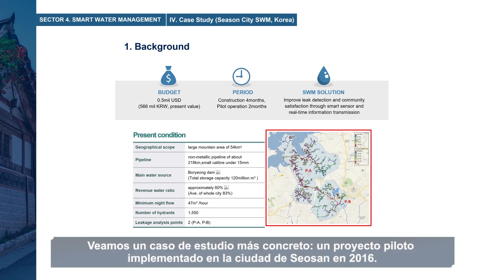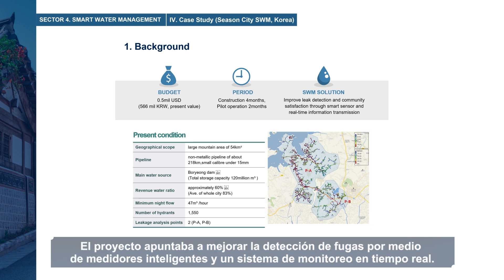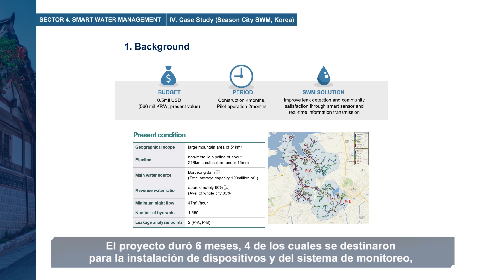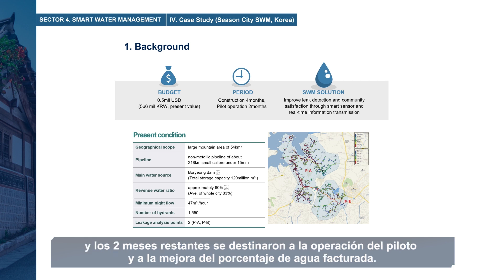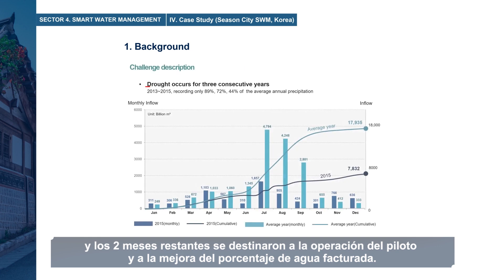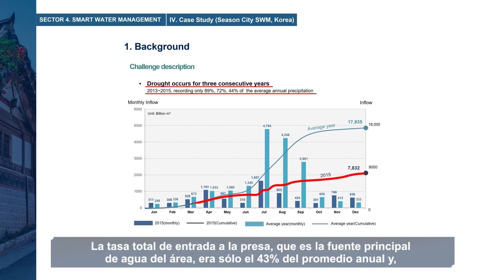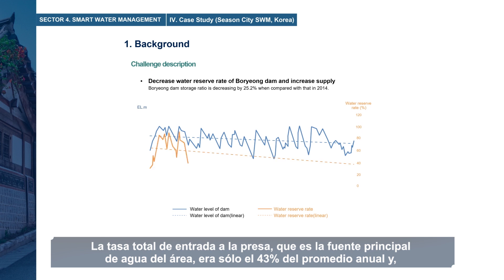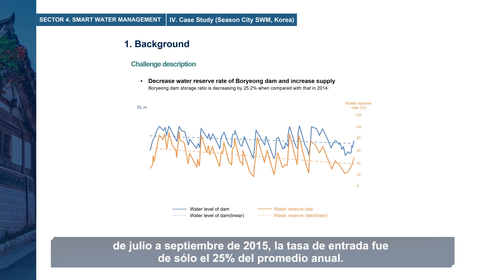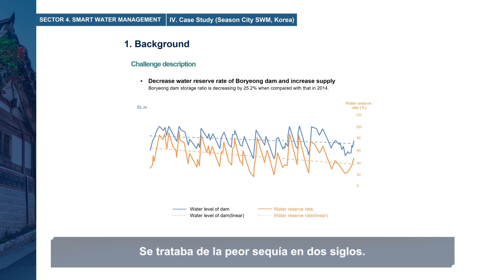Let's look at a more concrete case study: the pilot project implemented in Seosan City in 2016. The project aimed to improve leak detection through smart meters and a real-time monitoring system. The project lasted six months — four months for installing devices and monitoring systems, and the remaining two for pilot operation and revenue water ratio improvement. The project was implemented due to a severe drought. Total inflow rate into the dam, which was the main water source for the area, was just 43% of the average year, and from July to September 2015, the inflow rate was only 25% of the annual average — the worst drought in two centuries.